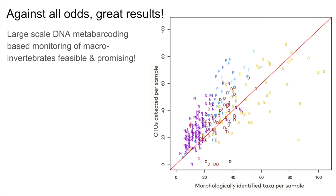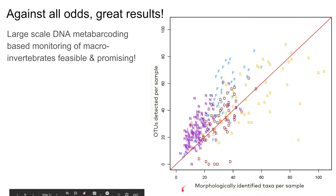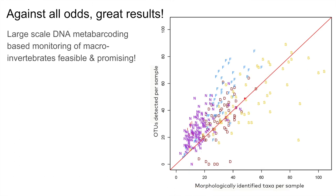Despite all of these challenges, and really thanks to the effort of everybody in the team, we got really nice data out of the study. We can see here the amount of taxa detected with DNA metabarcoding plotted against the amount of taxa detected per sample with morphology, and there's a pretty good relationship. We basically get the same amount of taxa, or in many cases even more taxa detected with the DNA-based method. This is really promising, but we need to sit down and focus on improving the methods and especially improving the scaling of this DNA-based approach.